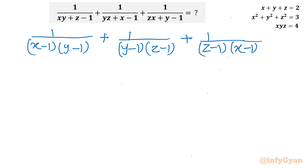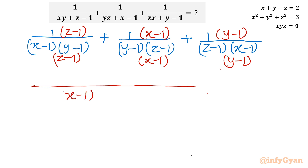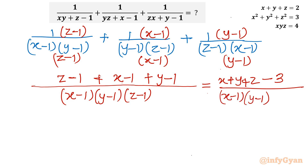Taking the LCM of the three denominators, which is (x minus 1)(y minus 1)(z minus 1), we multiply each term appropriately. The numerator becomes (z minus 1) plus (x minus 1) plus (y minus 1), which simplifies to x plus y plus z minus 3. So the combined expression is (x plus y plus z minus 3) over (x minus 1)(y minus 1)(z minus 1).